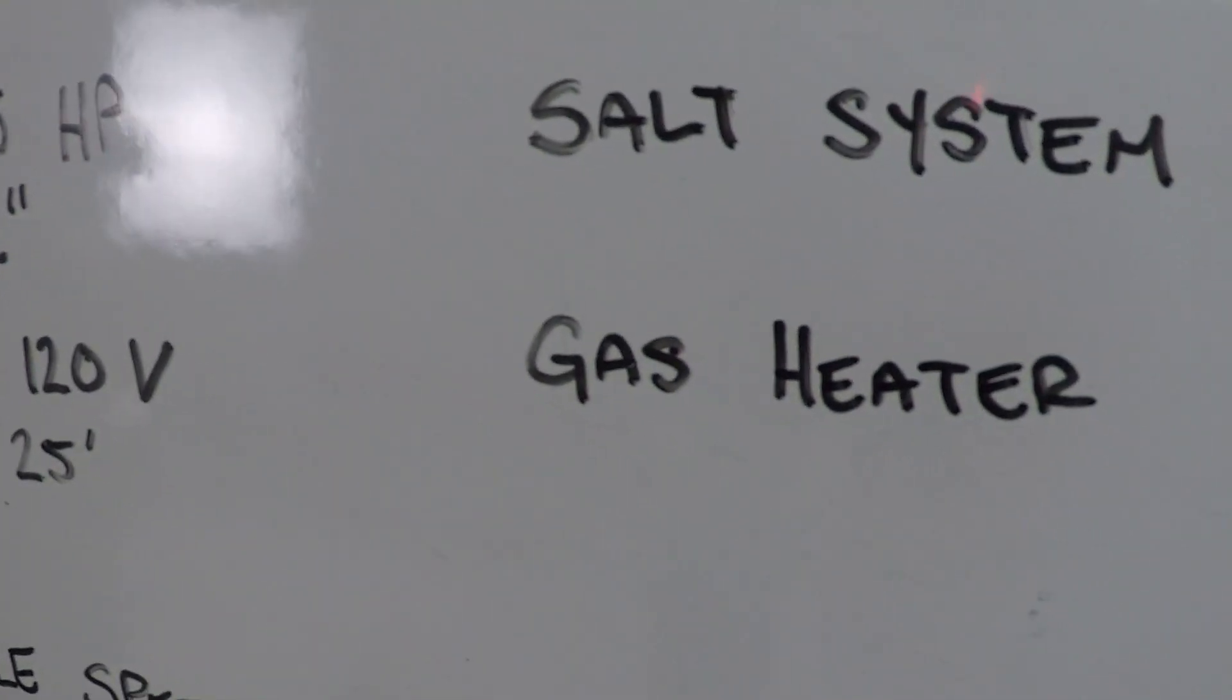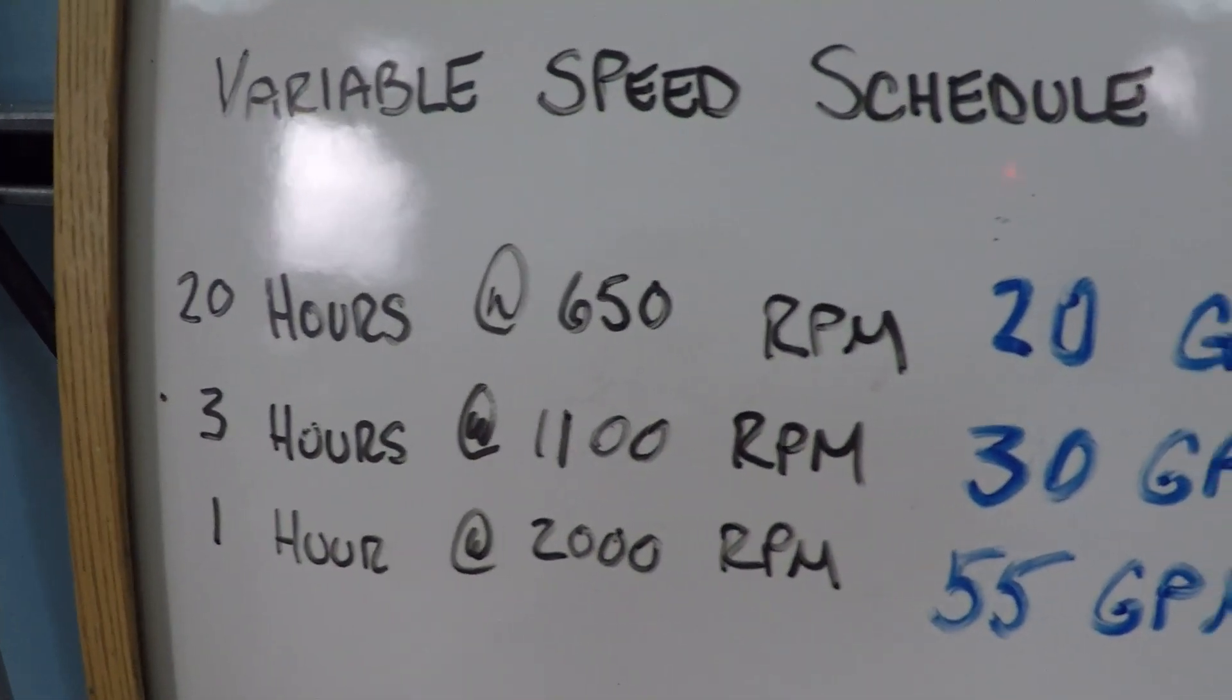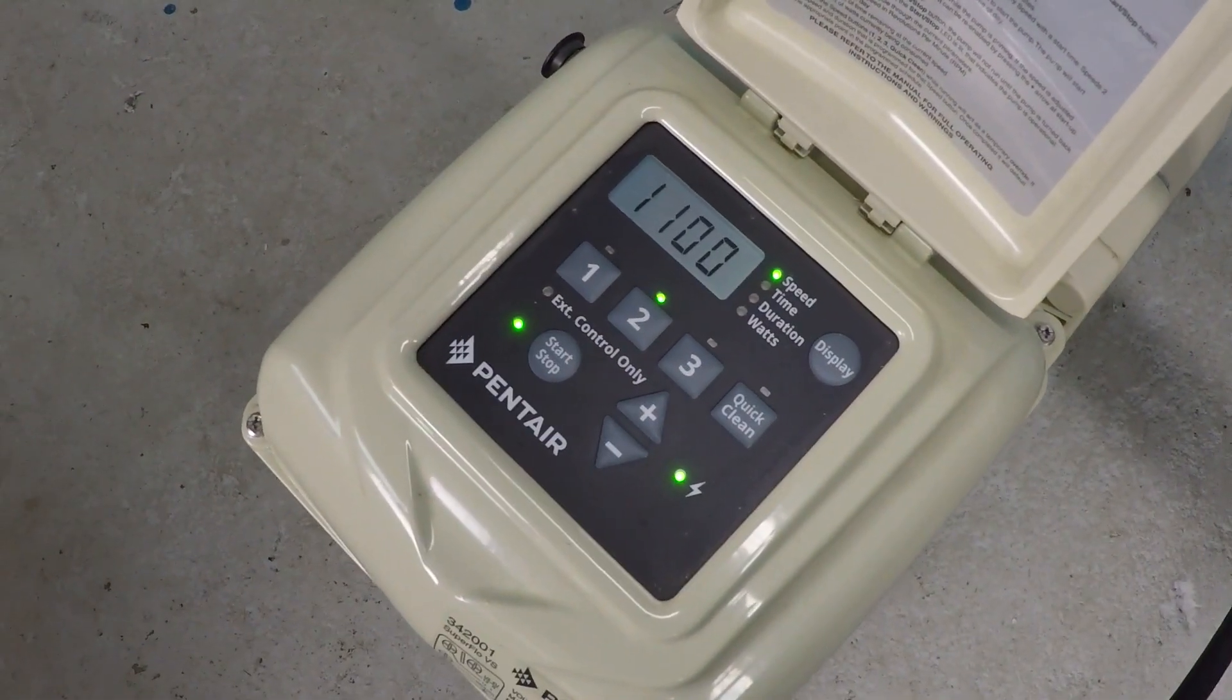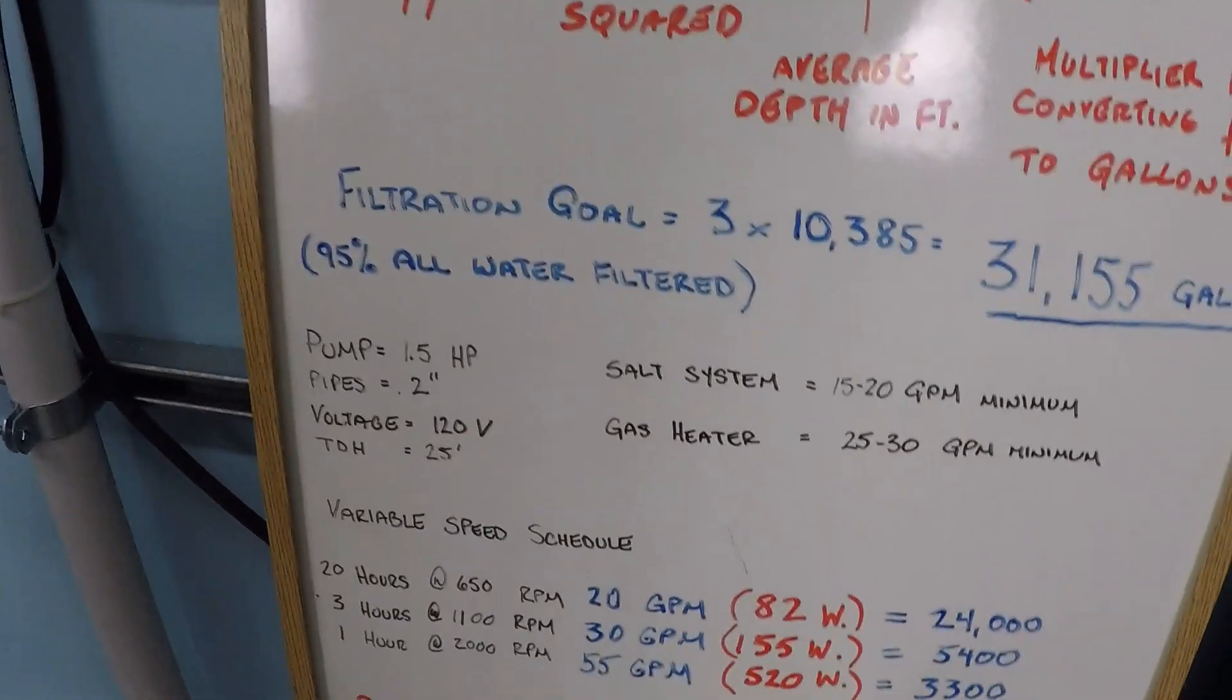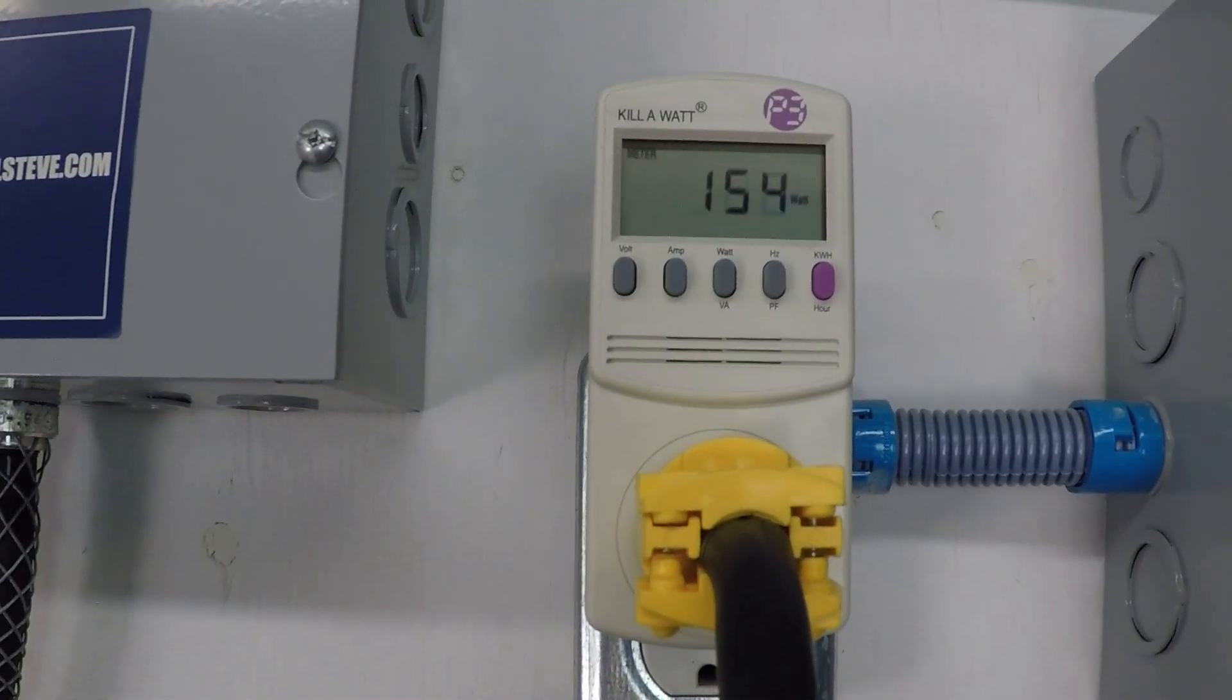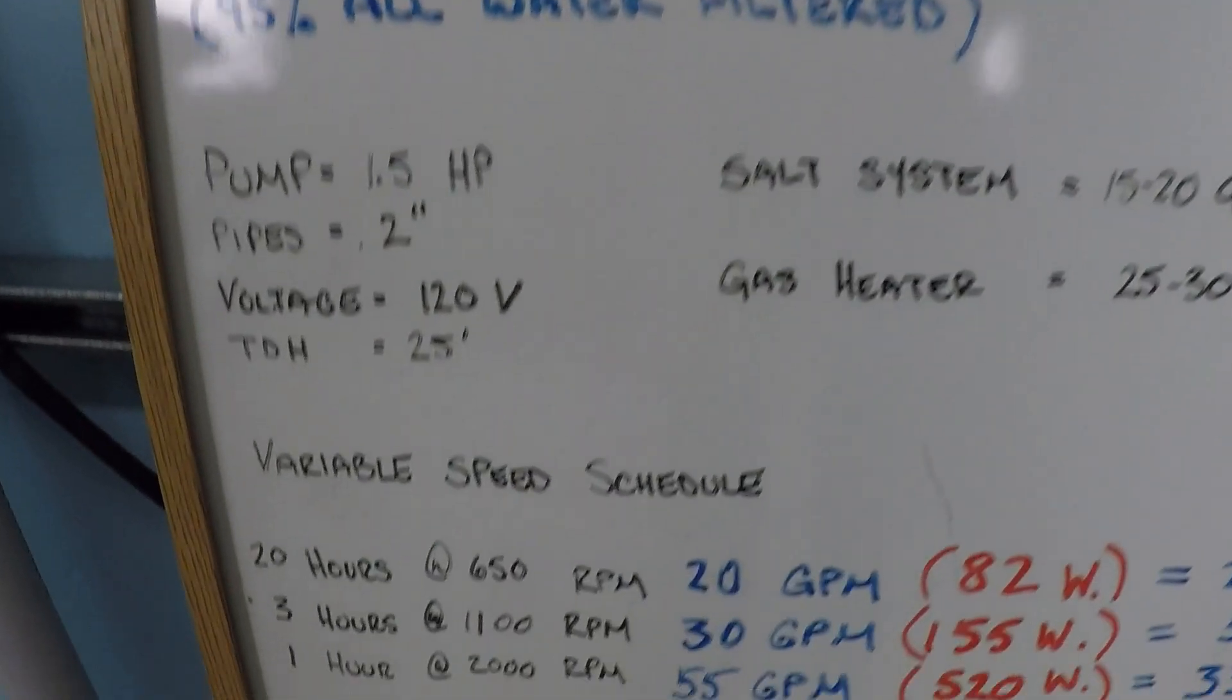But what if we need a couple of hours per day for the heater to run? Then we need to be at a little bit higher RPM, and normally this would be higher than this, but this is a pretty small pool. As a result, the mid-speed that we're going to test here is only 1,100 RPM, and that should net us 30 gallons per minute. We're looking for 30 gallons per minute, 155 watts. We've got the 30 GPM. That's our wattage, about 155. Pretty low power consumption, considering we're getting 30 gallons per minute.